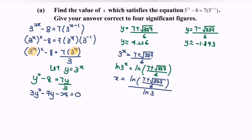The value of x is equal to 1.3194. Referring to the requirement to give the answer correct to 4 significant figures, the value of x will be equal to 1.312.